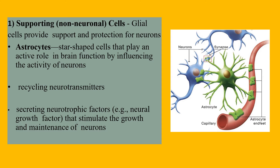Astrocytes are star-shaped cells that play an active role in brain function by influencing the activity of neurons. They help in recycling neurotransmitters and secreting neurotrophic factors — for example, neural growth factors — which stimulate the growth and maintenance of neurons.